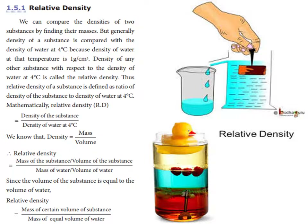We know that density is equal to mass by volume. So the density of the substance equals mass of the substance divided by its volume. Therefore, relative density equals the mass of a certain volume of substance divided by the mass of an equal volume of water.